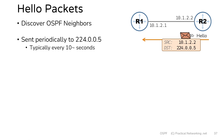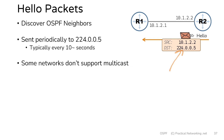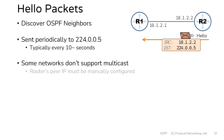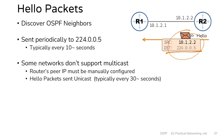Some network types do not support multicast addresses, meaning you can't send something to a multicast address. These are known as non-broadcast networks. For those types of networks, since you can't send something to a multicast address to discover other neighbors, an administrator needs to manually configure the neighbor's IP address. In those cases, the hello packets are then sent unicast directly to the IP address that was configured manually. This is how hello packets are still used to build a neighbor adjacency even on networks that don't support multicast.